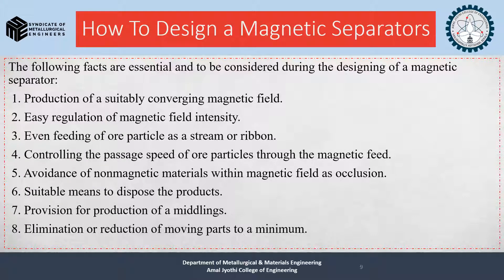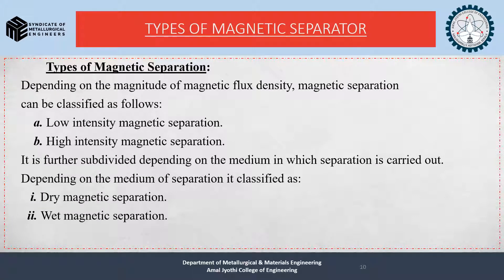To design a perfect magnetic separator, we must follow essential steps: (1) make a suitable converging magnetic field; (2) easy regulation of magnetic field density; (3) even feeding of ore particles as a stream or ribbon; (4) controlling the passage speed of ore particles through the magnetic field; (5) avoidance of non-magnetic materials within the magnetic field as occlusion; (6) suitable means to dispose of products; (7) provision for production of middlings; (8) elimination or reduction of moving parts to a minimum.